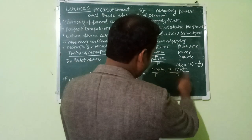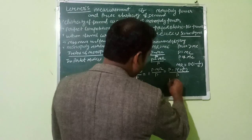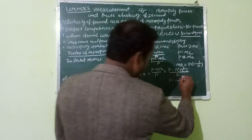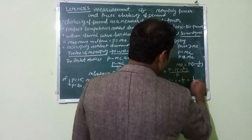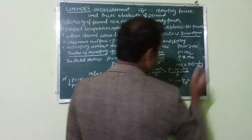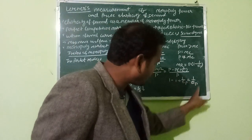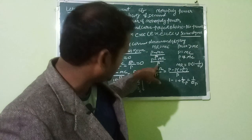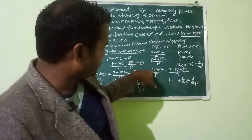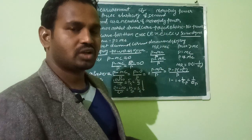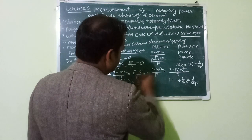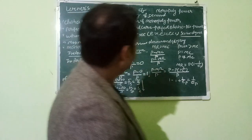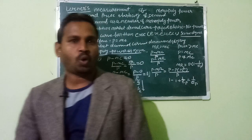Working through the algebra, (P - MR) / P simplifies to 1/e. So the Lerner index (P - MC) / P = 1/e, where e is the price elasticity of demand. We can also write this as (P - MR) / P or (AR - MR) / AR, since price equals average revenue and the demand curve is the same as average revenue. So the degree of monopoly power equals the reciprocal of the price elasticity of demand.